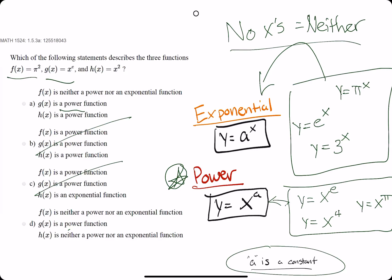Okay, so that's a little tricky, right? So we're looking at h now, which is x squared, which must also be a power function because we have x as the base and a number as the exponent. So h is also a power function.